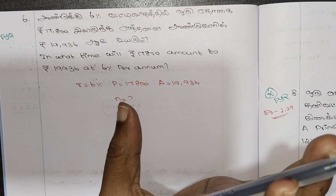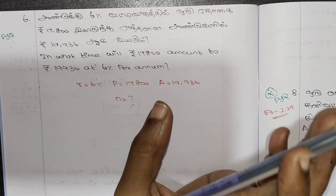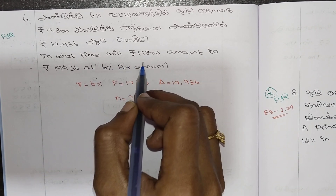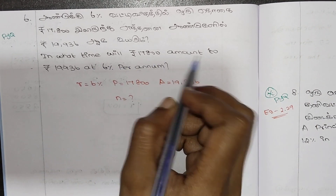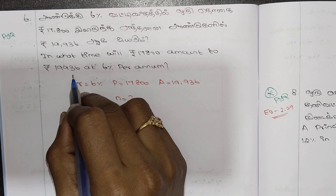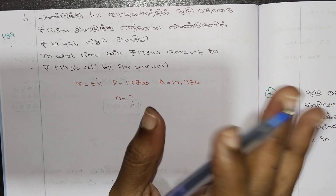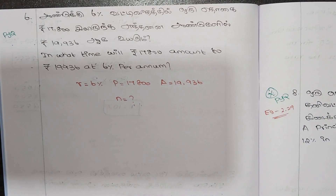That's the model. We will check: in what time will 17,800 amount to 19,936 at 6% per annum?